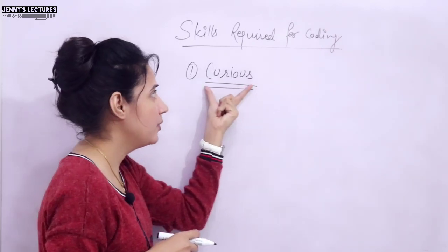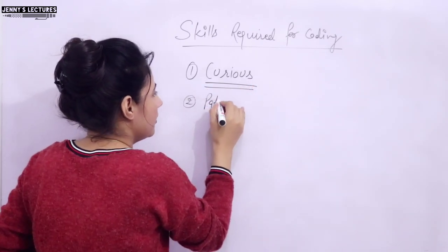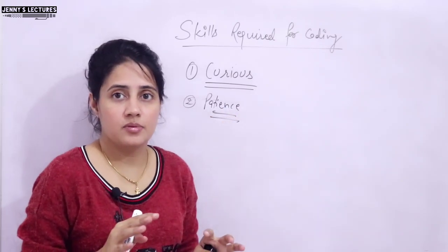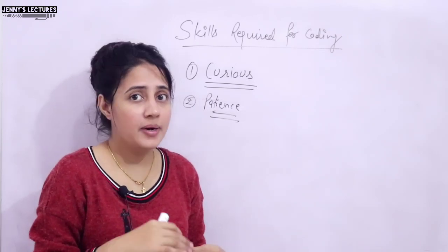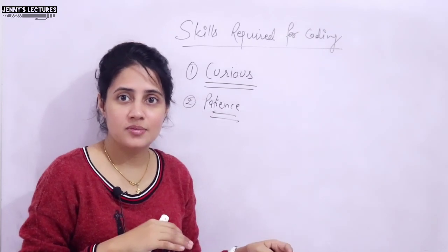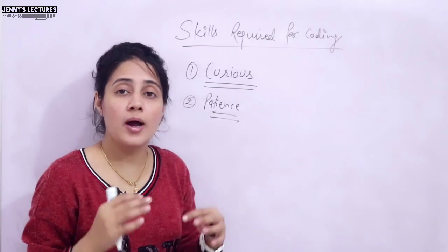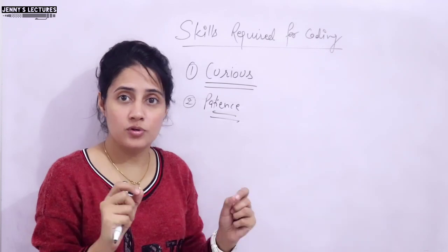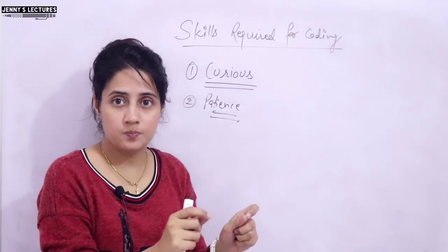The second very important point is patience. You should have patience. Nowadays everyone wants to learn everything quickly, but you can't learn coding in just 21 days. It needs years of practice to be a good coder. You have to calm down and be very focused on whatever you are learning.